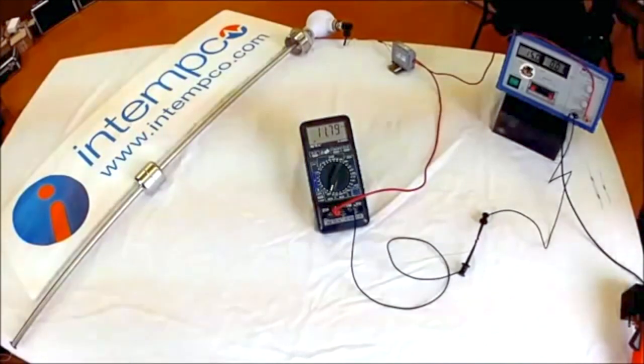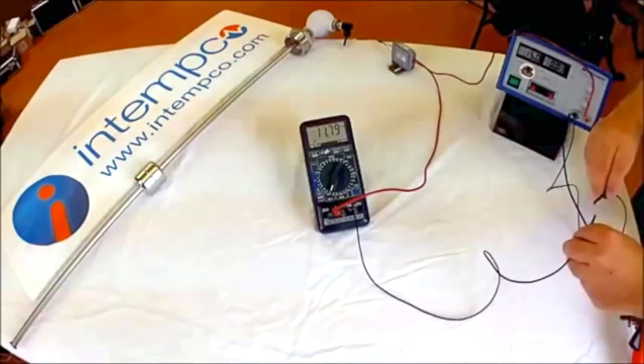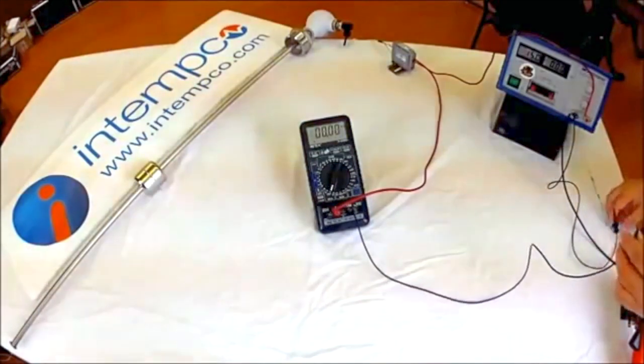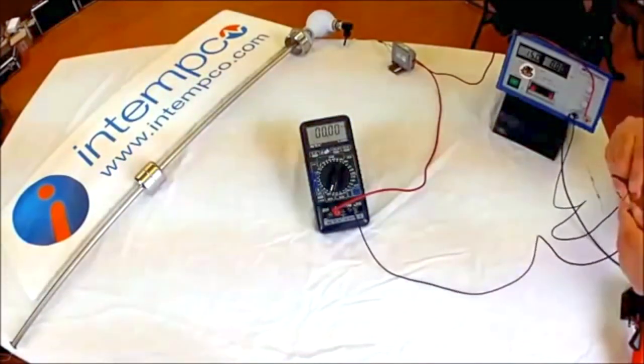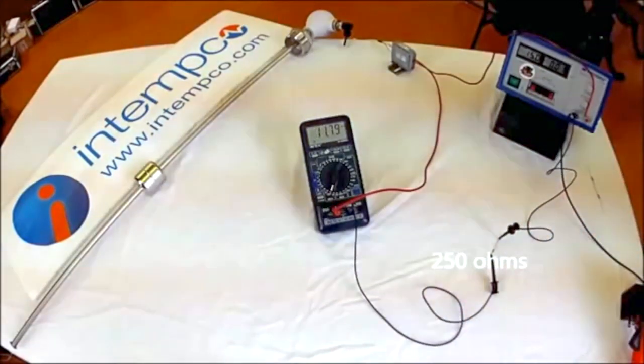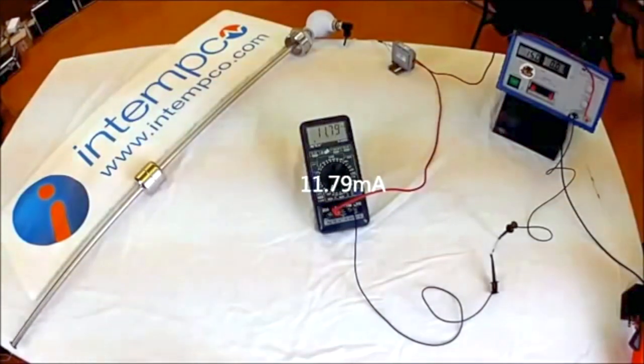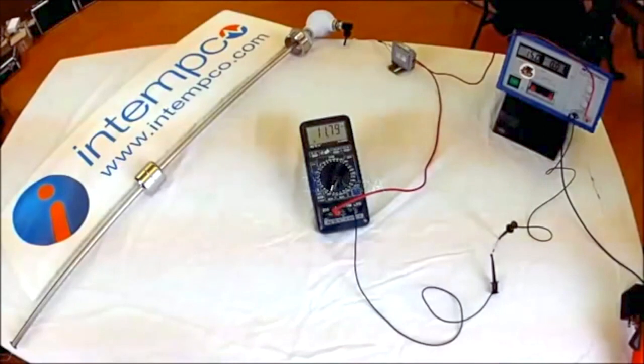We will now break the loop and insert a 250 ohm resistor in series. With the circuit restored, you can see the ammeter is still indicating the same 12 milliamp current as it did before we inserted the resistor. The embedded processor will maintain the proper current despite changes in voltage or resistance in the circuit.